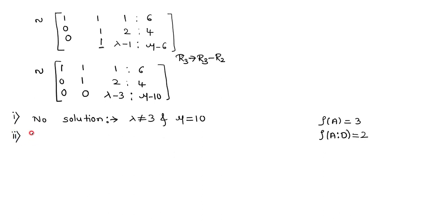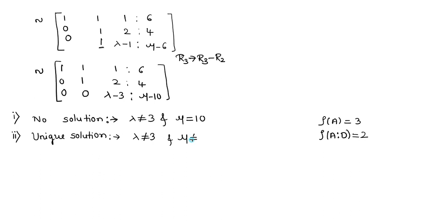In the second case, the system has a unique solution. The system will have a unique solution if the rank of the matrix and the rank of the augmented matrix are the same and equal to the number of variables. If lambda is not equal to 3 and mu is also not equal to 10, then both entries are non-zero, the rank of matrix A becomes 3, and the number of variables x, y, z is also 3. Therefore, the system will have a unique solution.